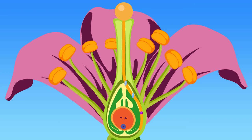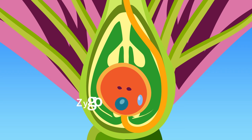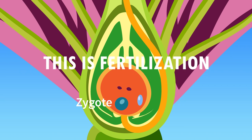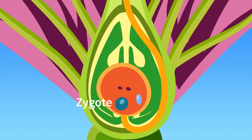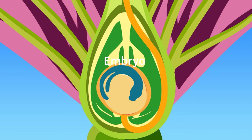When the pollen tube reaches the ovary, it penetrates the ovule releasing the two sperms. One of the sperm fertilizes the egg to form the zygote — this is fertilization. The other sperm combines with the two polar nuclei to form the endosperm. The zygote grows into an embryo, and the endosperm nourishes the growing embryo.